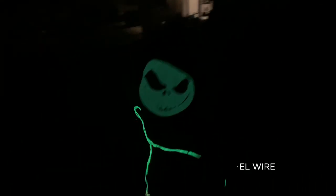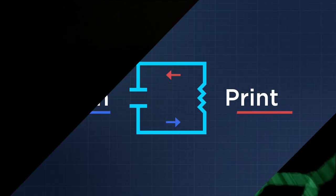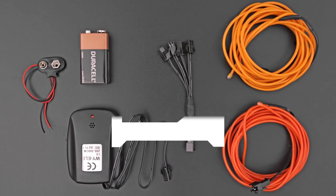We used EL wire to create a simple glowing skeleton. EL wire is flexible and comes in different colors. You can get the parts to build this project by checking out the links in the description of this video.